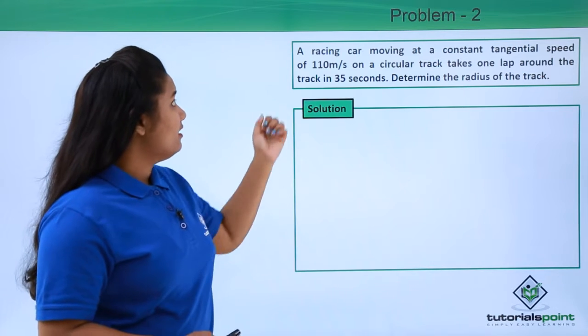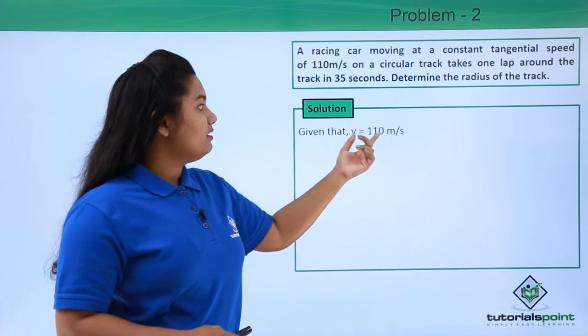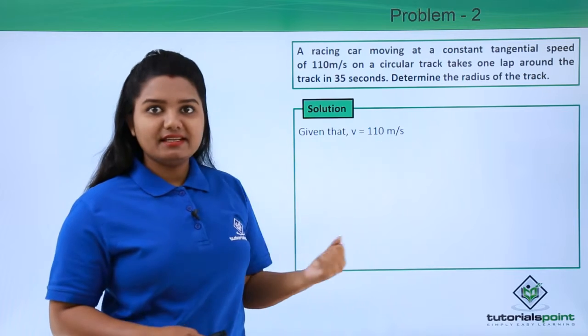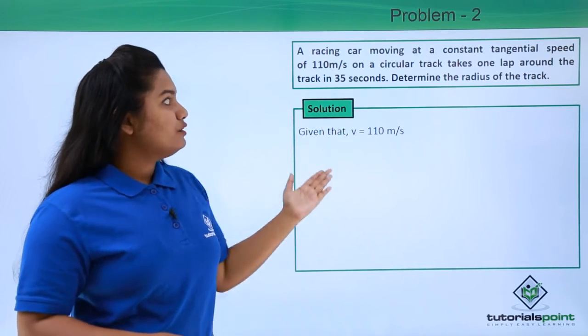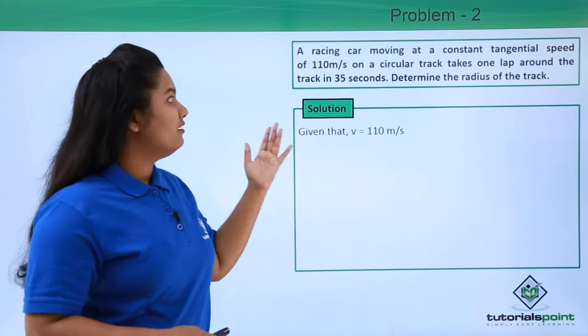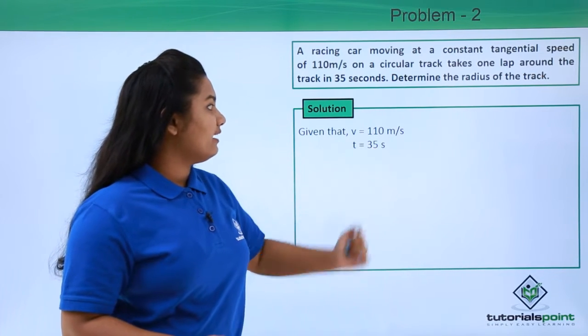So here the velocity is given to be 110 meters per second and the time that the car takes for one lap is 35 seconds.